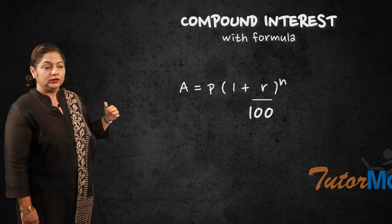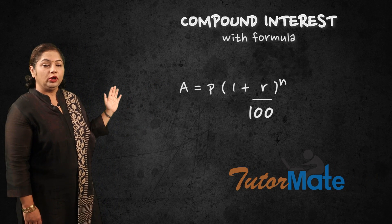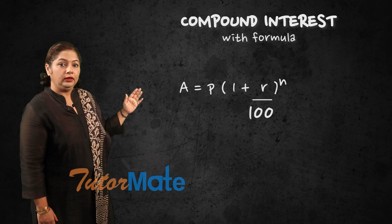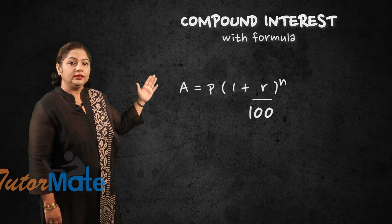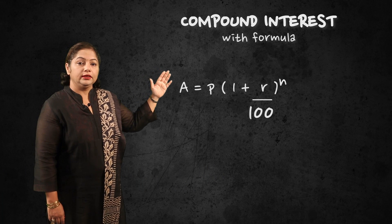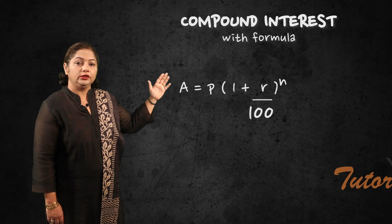Let me repeat: A is amount, P is principal, R is rate, and N is number of years.